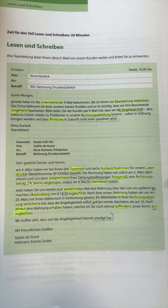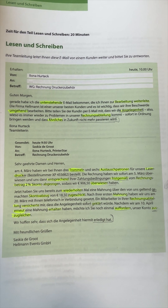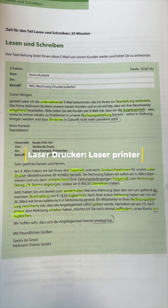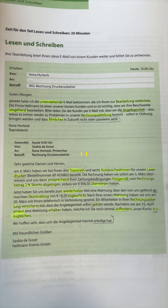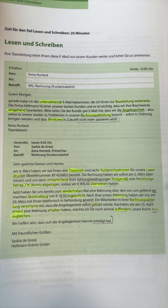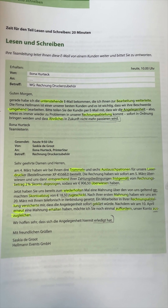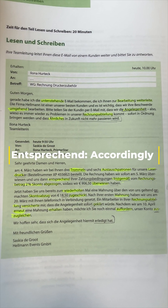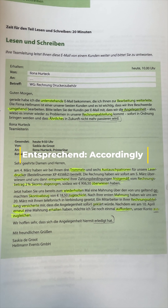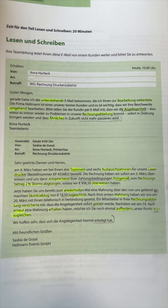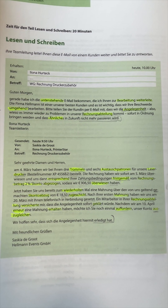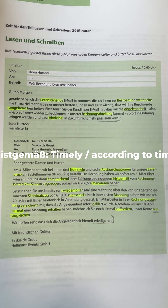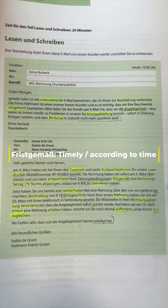Then we have the next word 'Laserdrucker' — Laserdrucker means 'laser printer.' After Laserdrucker we have 'entsprechend' — entsprechend means 'accordingly.' After entsprechend we have 'fristgemäß' — fristgemäß means 'according to time' or 'on time.'